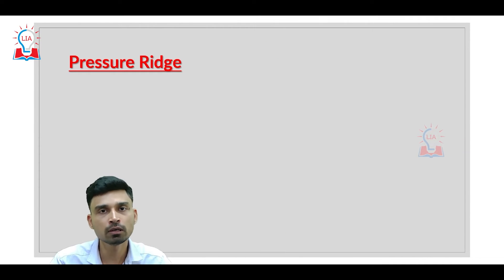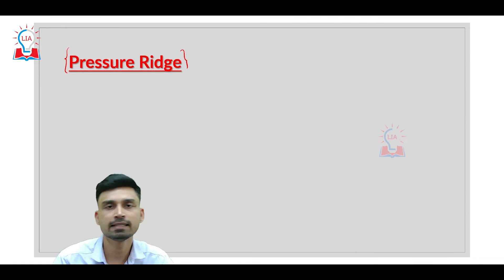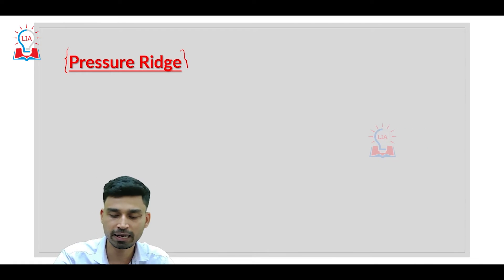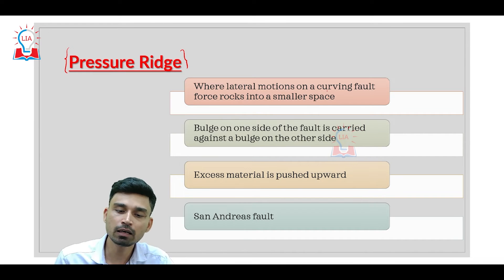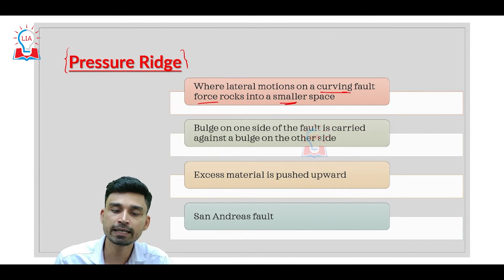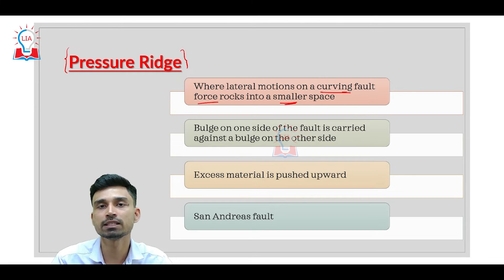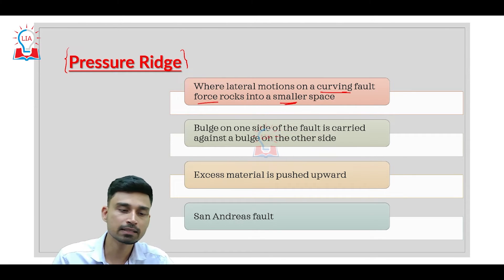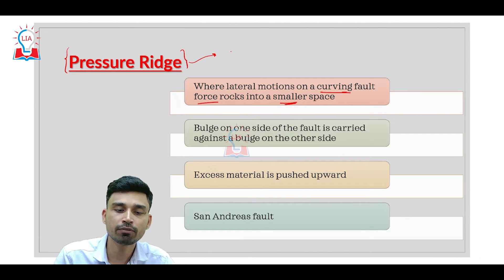The third tectonic landform is referred to as a pressure ridge. A pressure ridge forms where lateral motions on a curving fault force rocks into a smaller space. Pressure ridges basically develop in areas that have transform plate interactions.